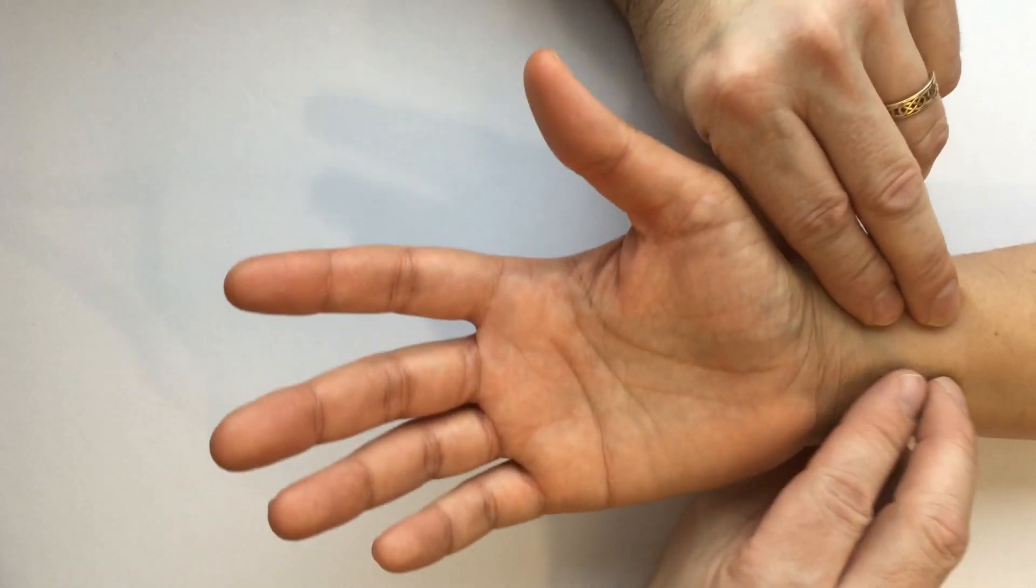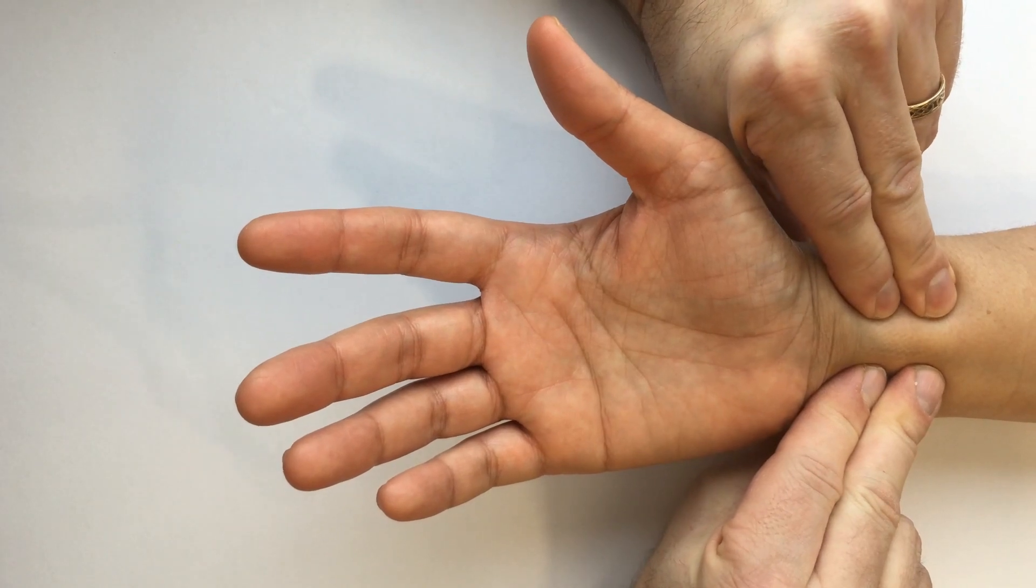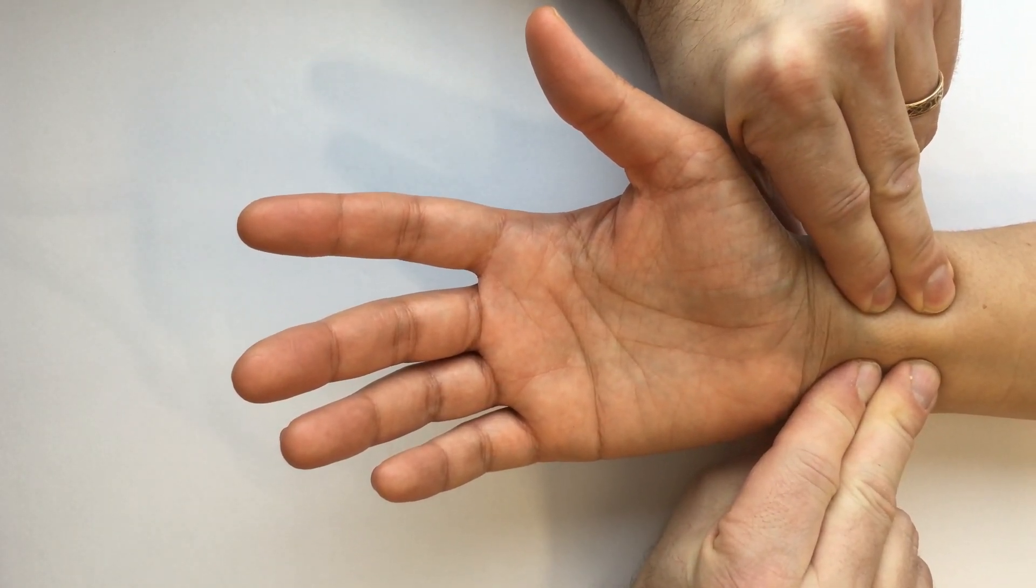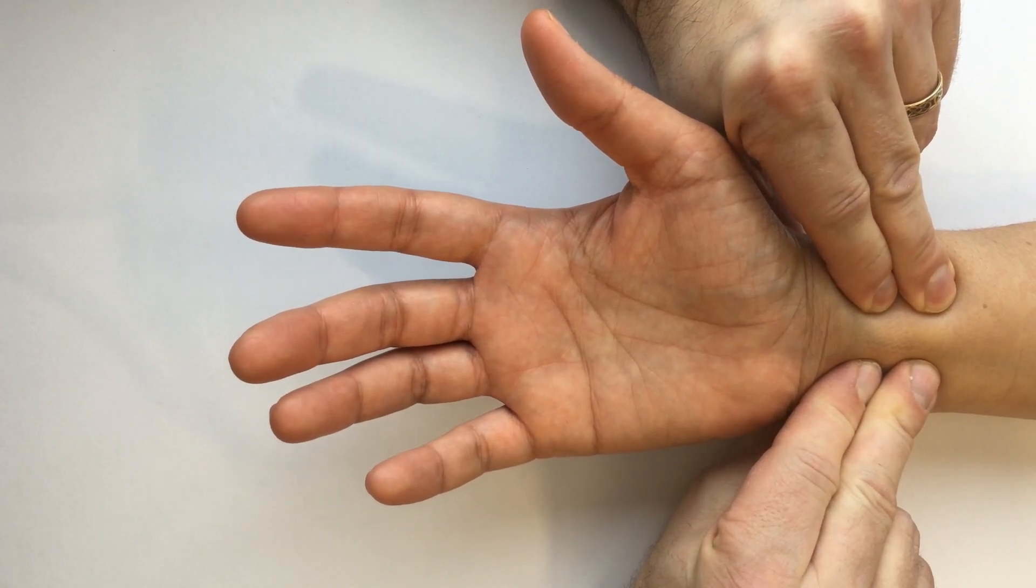Compress both the radial and ulnar arteries at the same time to occlude them, and then have your patient squeeze and release into a fist about four times.